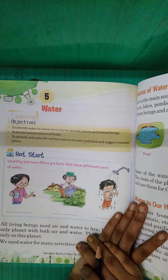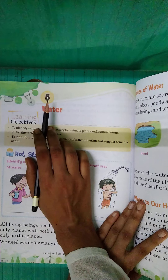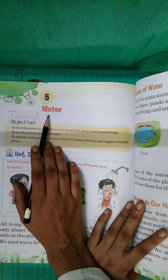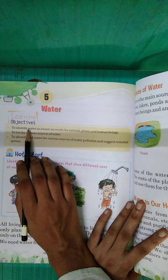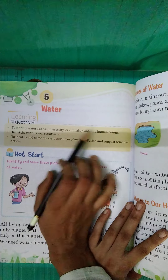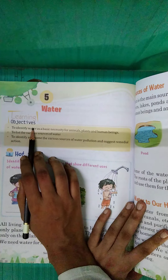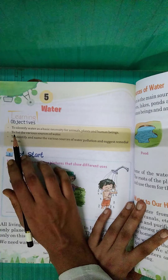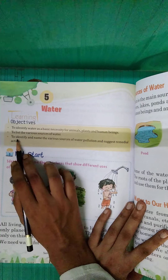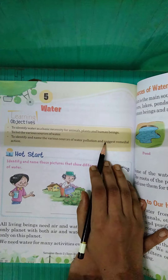Good morning, second class. Today we are going to start Chapter 5 of EVS. We will study what water is about — to identify water as a basic necessity for animals, plants, and human beings. We will see how water is used by animals, plants, and human beings, and list the various sources of water, identifying where water is found.